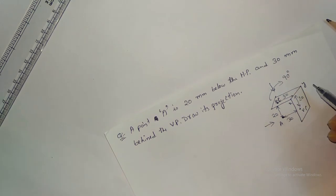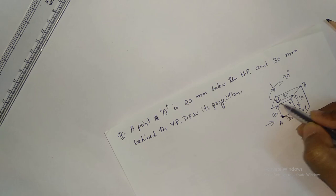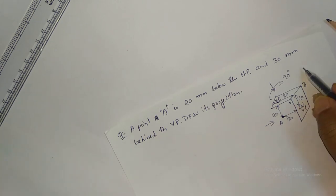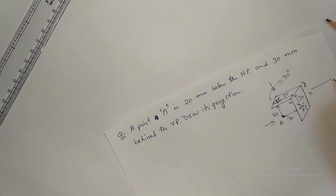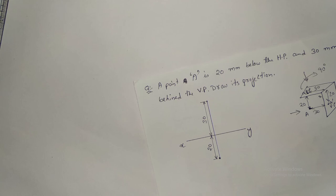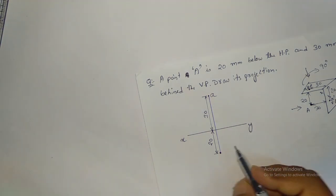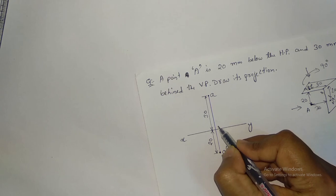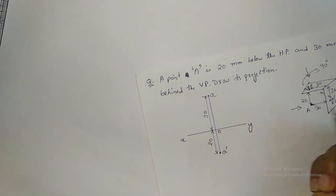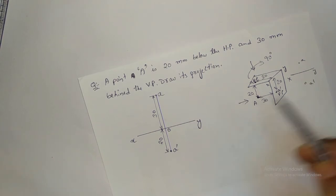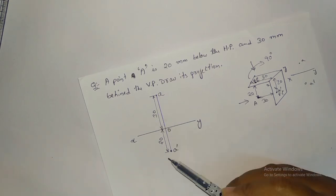The procedure is to rotate the HP 90 degrees clockwise. In that case, the top view A comes above XY and the front view A-dash comes below XY. I have drawn this: top view A is above XY and front view A-dash is below XY. This distance is 30mm and this is 20mm, with intersection point O.